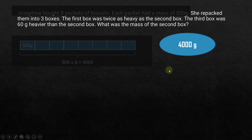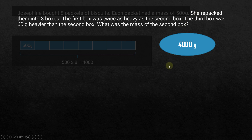Now let's move on to the second part. We'll rewrite the statements to make them easier to work with. She repacked them into three boxes; the first box was twice as heavy as the second box. In such statements, the item that comes after 'twice as heavy as' is our reference point — in this case, the second box is the reference point.